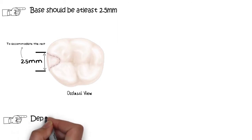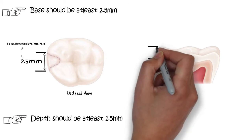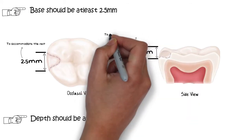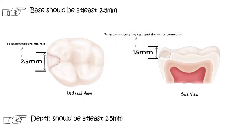The depth of the rest seat should be approximately 1.5 mm from the marginal ridge. This reduction is necessary in order to accommodate the sufficient bulk of the metallic rest, which will provide the adequate rigidity to the rest and the connecting minor connector.